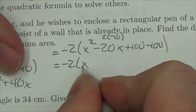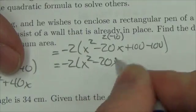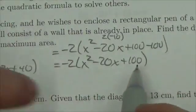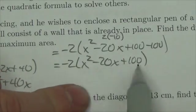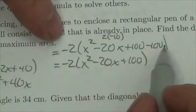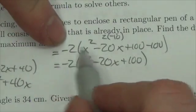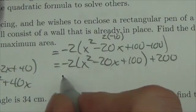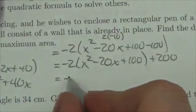So negative 2 times x squared minus 20x plus 100. I will take the negative 100 out. Remember I'm trying to complete the square here, and if I've got a perfect square trinomial, that last term will always be positive. But to get the negative 100 out I have to multiply it by the leading coefficient of negative 2. So this will become plus 200.